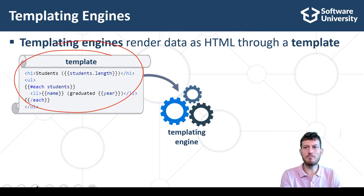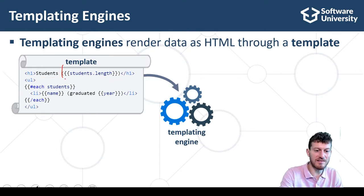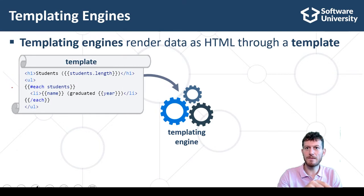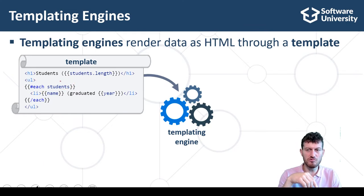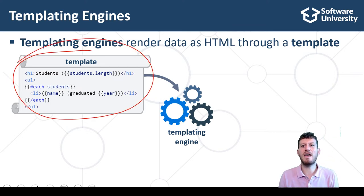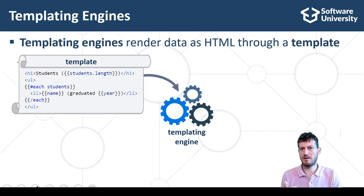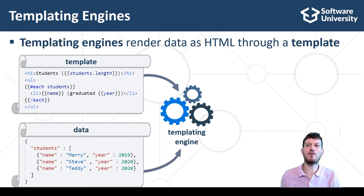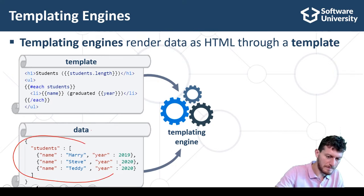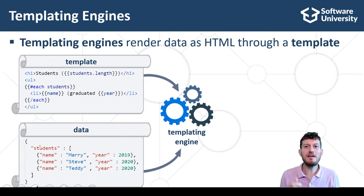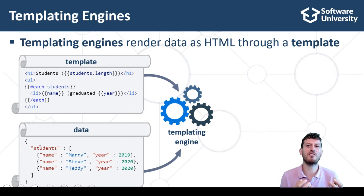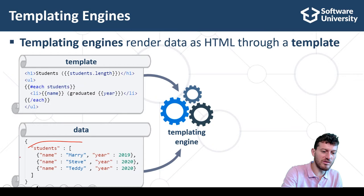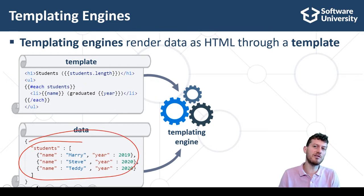Typically, templates combine HTML with special tags. Templates can render variables, iterate over a collection, or perform conditional checks. For example, we can write a template to render a list of students as shown here. Data for rendering comes as an object, JSON string, or other format, and it is typically retrieved from the backend or from a database. In this example, a JSON object holds a list of students, names, and years of graduation.